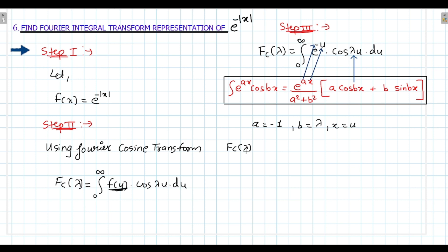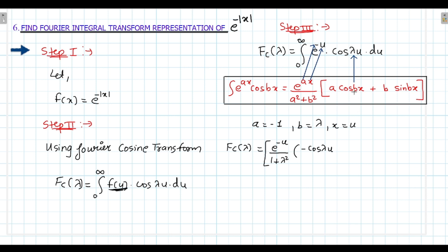So fc of lambda — this equation: the 0 to infinity formula gives us e raised to ax. The value of a is minus 1, so minus; x value is u. So e raised to minus u upon a² — minus 1 squared is 1 — plus b² which is lambda², in bracket: a is minus 1, so minus cos(b·x) where b is lambda and x is u; plus b which is lambda into sin(lambda·u).